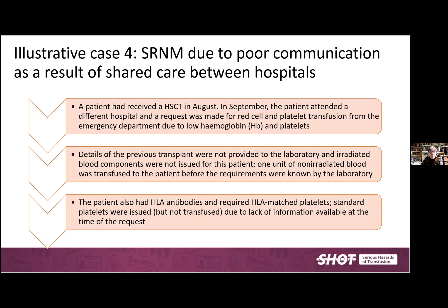Fourth case: a patient had a stem cell transplant in August. A month later, the patient was in a different hospital and needed transfusion due to low haemoglobin and platelet count. Details of the previous transplant were not provided to the laboratory, so the patient did not get irradiated blood components. This patient also had an additional requirement for HLA matched platelets, which were also not provided due to lack of information — a difficult issue when the patient is in a different hospital from where they had the transplant.